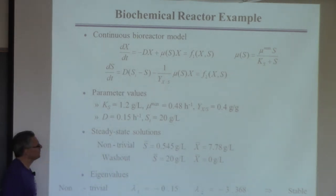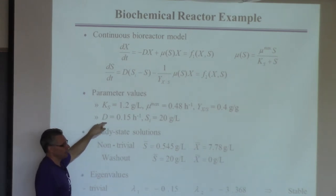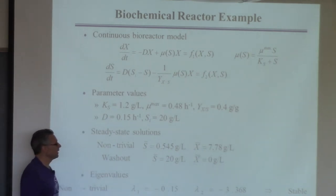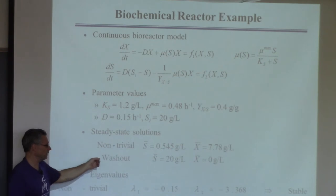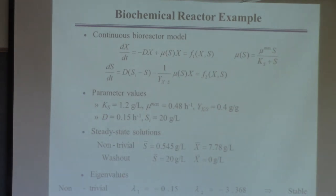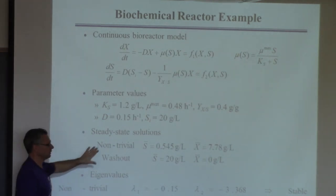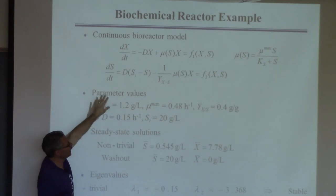The washout steady state is the one we'd like to avoid — you feed substrate in, it all comes out the other side, and you've made no cells. That typically happens if the flow rate is too high and you withdraw cells faster than they grow. We want to avoid this. Then we also linearized this model about the steady state, with two differential equations in x and s.